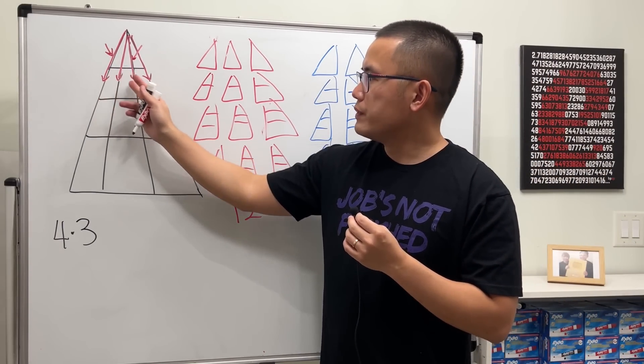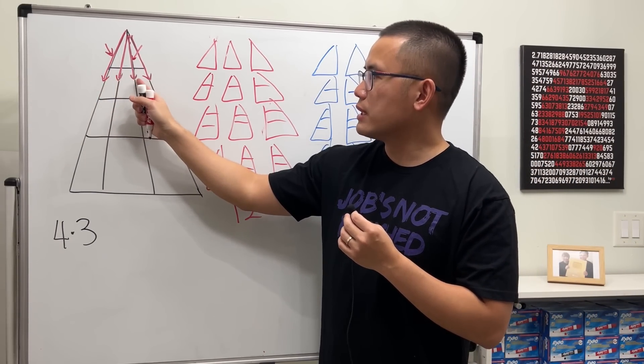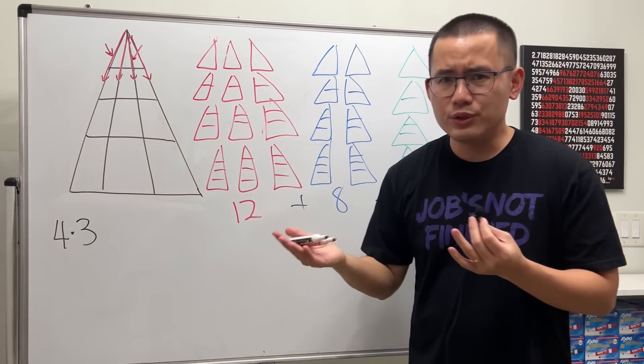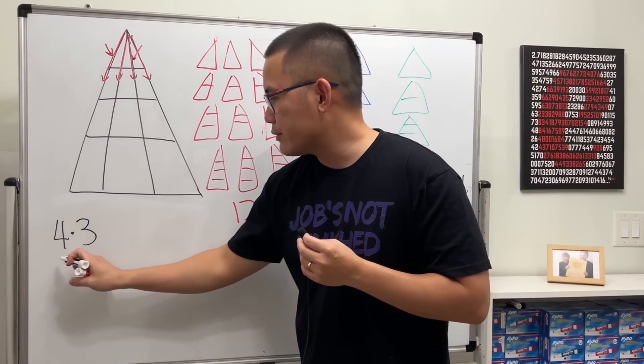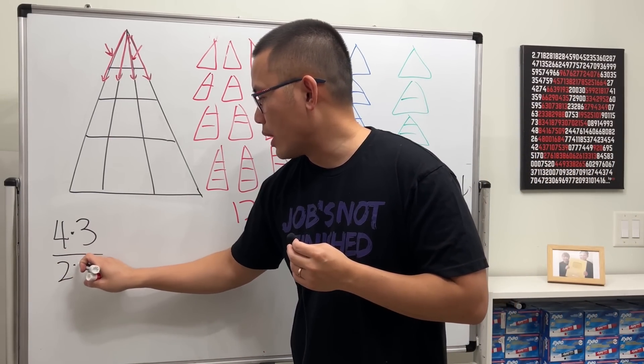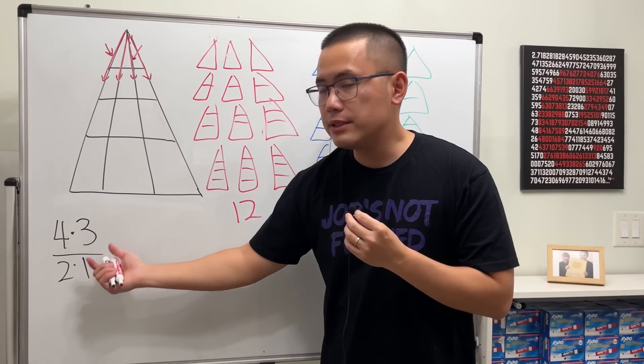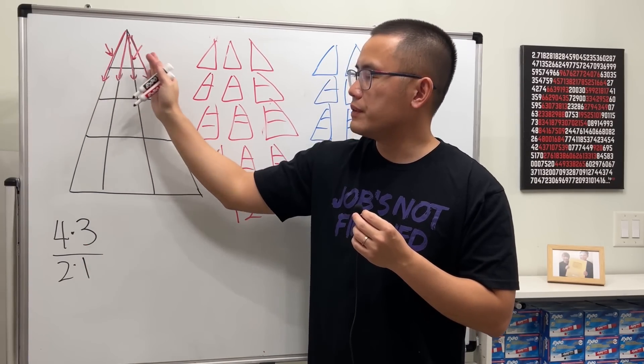However, the order of this doesn't matter because I could have chosen this one first and then chosen this one next, so it will still end up with the same two sides. Therefore we will have to divide it by two times one, like this. This tells us the number of ways to choose two lines out of this four.